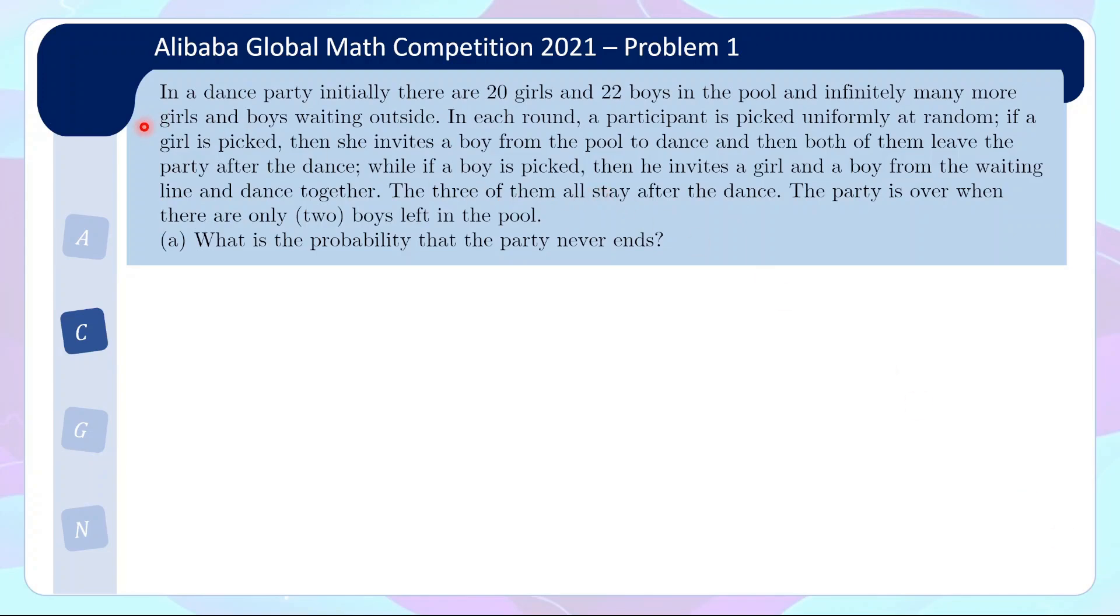It's an interesting problem actually. It's a probability question. So in a dance party, initially there are 20 girls and 22 boys in the pool, and infinitely many more girls and boys waiting outside. In each round, a participant is picked uniformly at random. If a girl is picked, then she invites a boy from the pool to dance and then both of them leave the party after the dance. If a boy is picked, then she invites a girl and boy from the waiting line and they dance together. The three of them all stay after the dance. The party is over when there are only boys left in the pool. So there's two parts to this question. First part is, what is the probability that the party never ends?